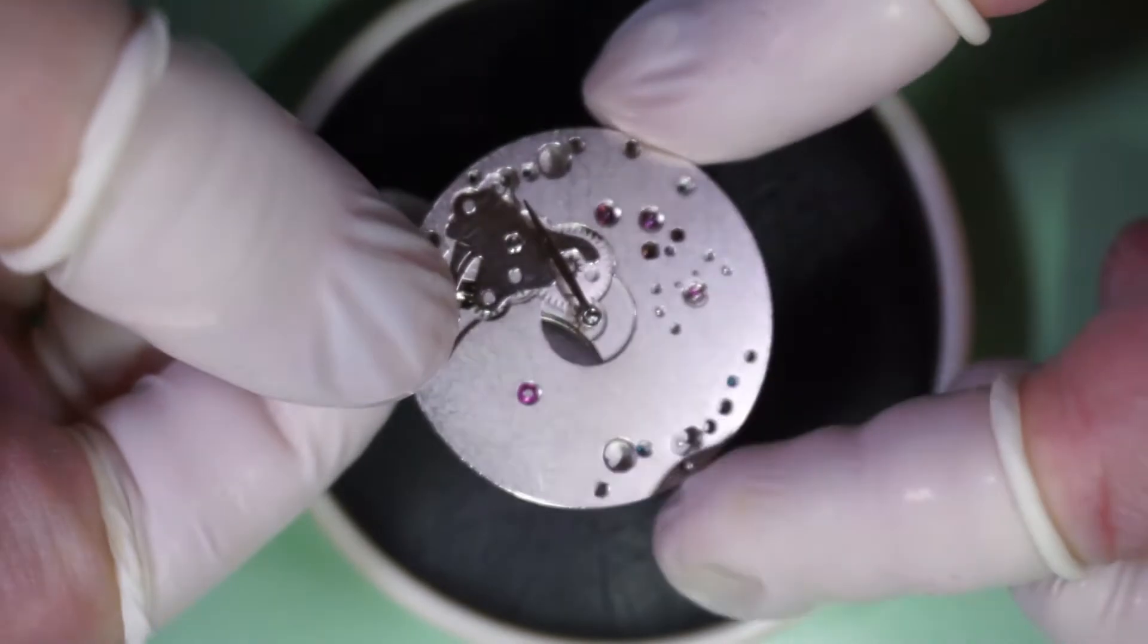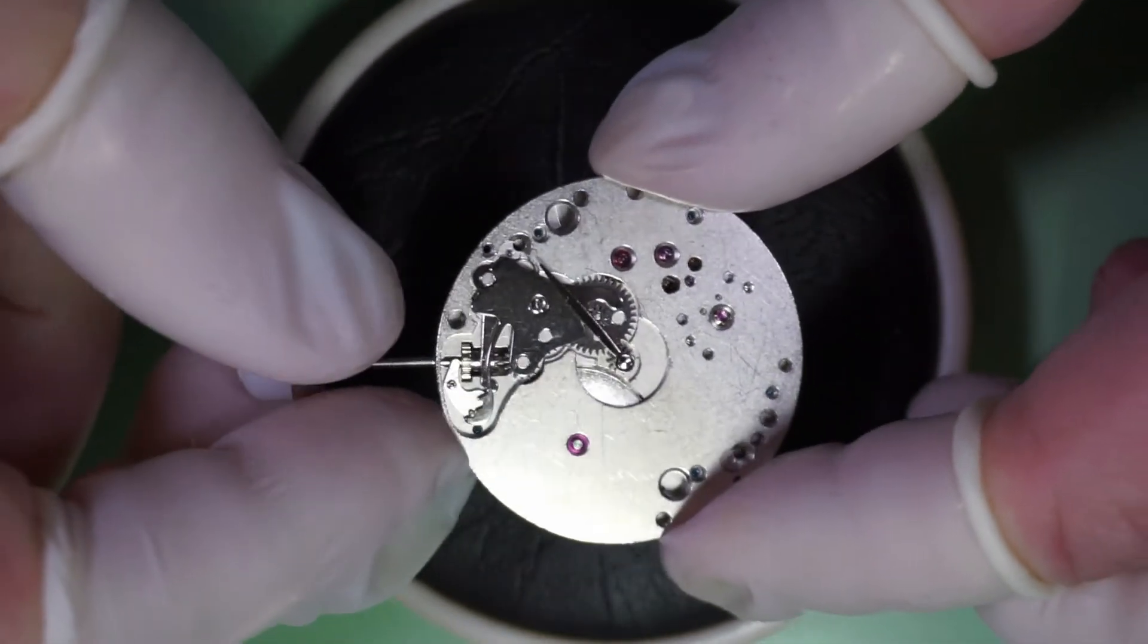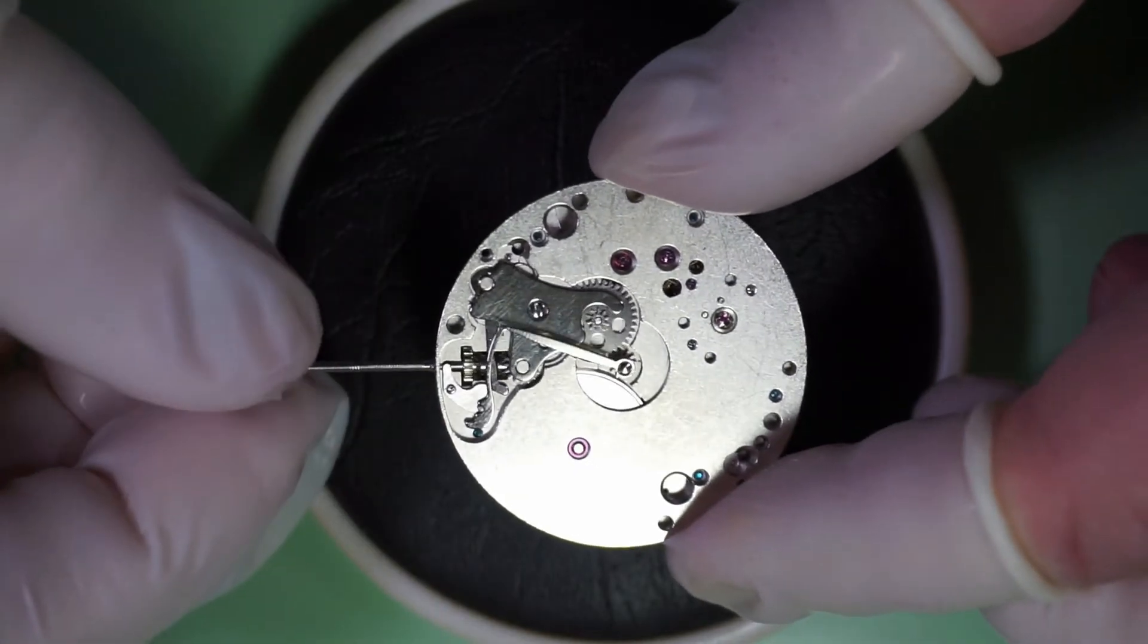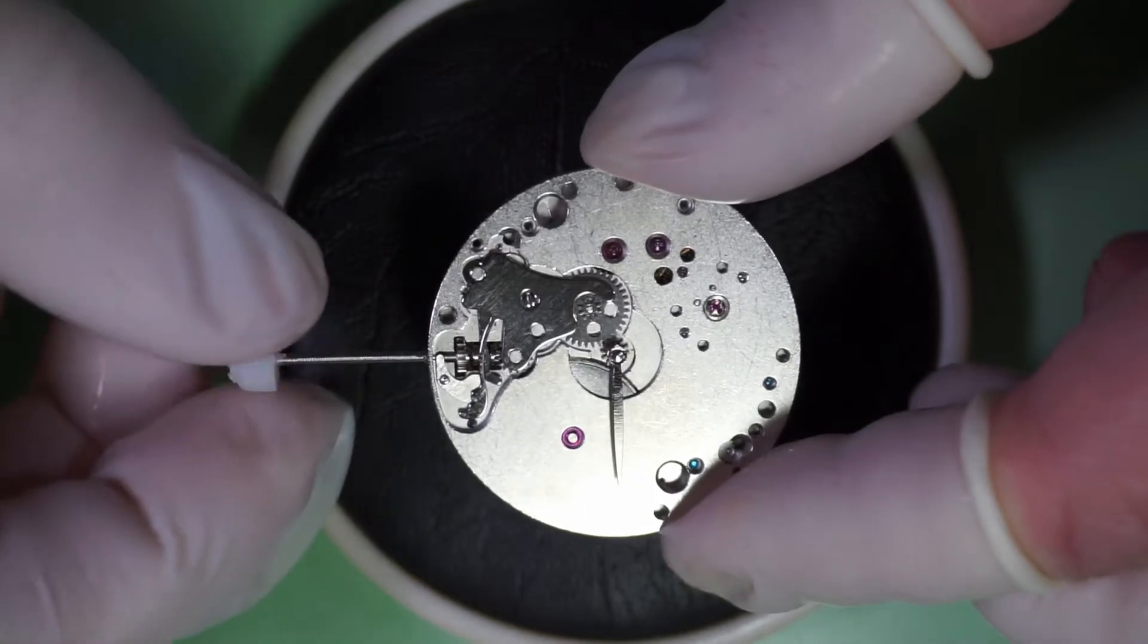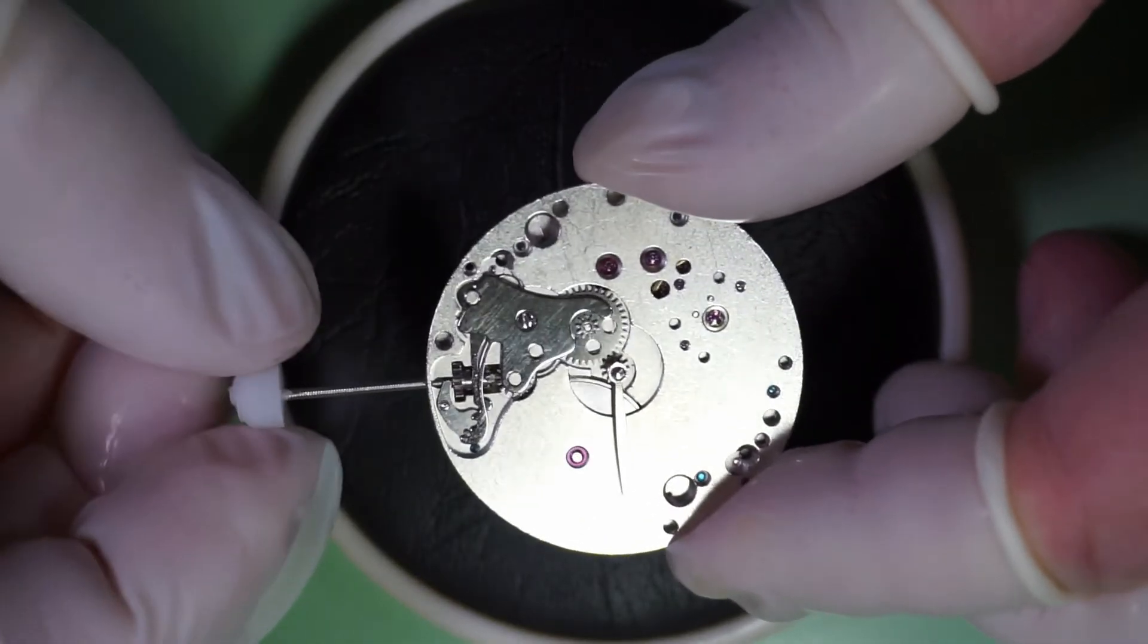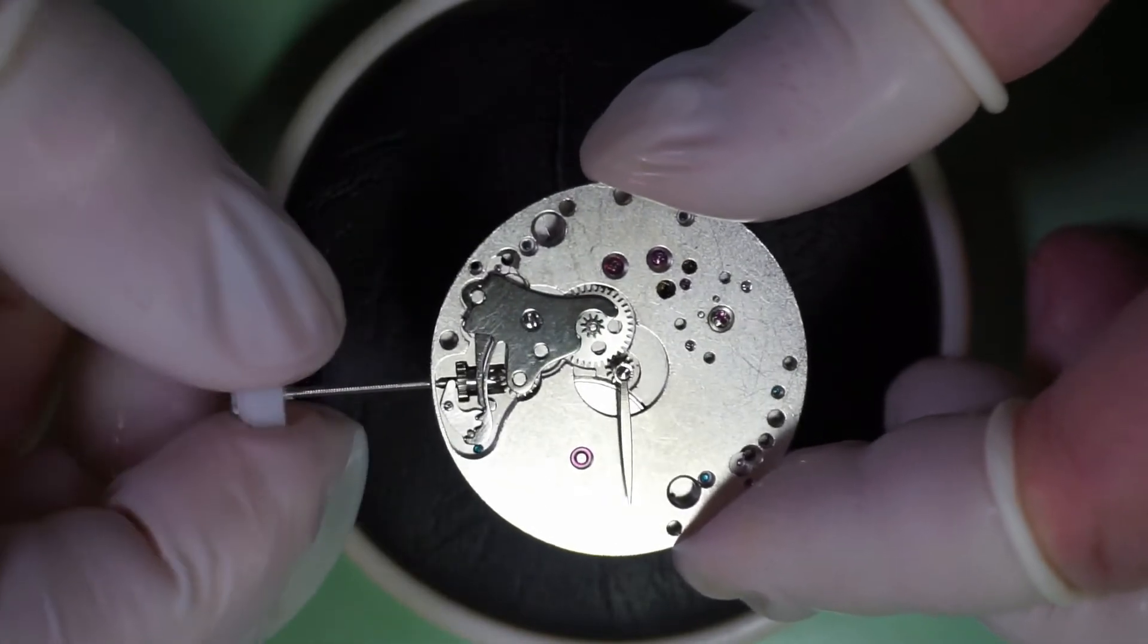Unitas was a Swiss watchmaking company that was established in 1898 and is currently a part of the Swatch Group's ETA division. The company originally released both the 6497 and 6498 movements in the 1950s and they were initially used in pocket watches.